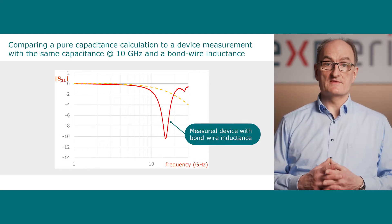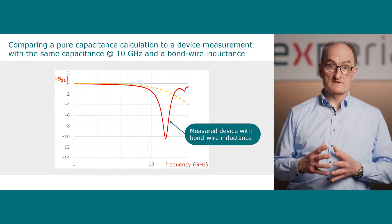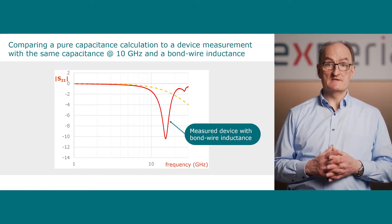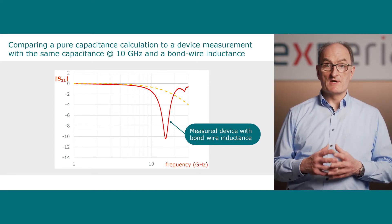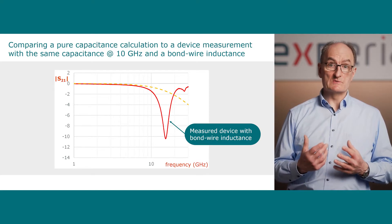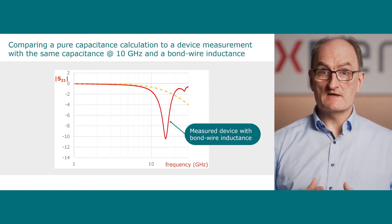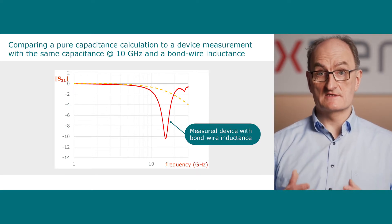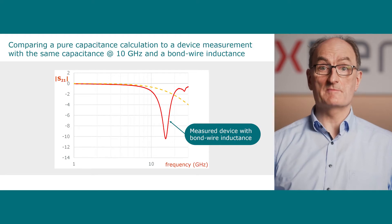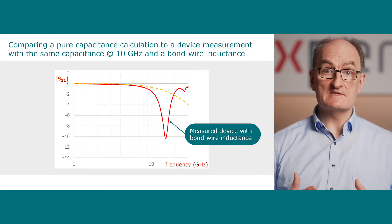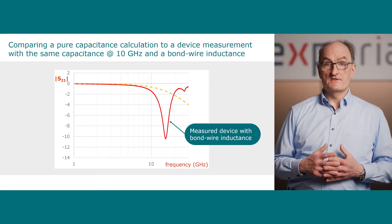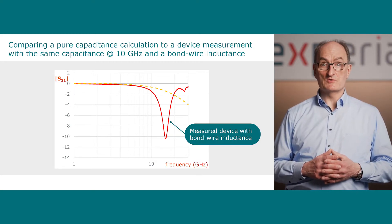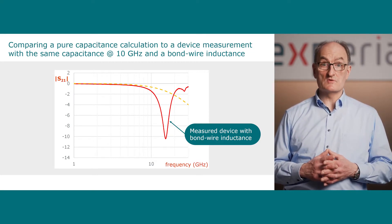In the second step, we add the measurement of the insertion loss of a demonstrator. This is a solid line. It has the same capacitance at 10 GHz as the model calculation, but it is wire bonded, which introduces an inductance to the system. As we can clearly see, the insertion loss behavior of this wire bonded device is significantly different compared to the calculated capacitance at 10 GHz and above. The additional inductance of the bond wire is turning the ESD protection device into a bandstop filter.